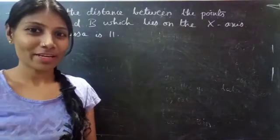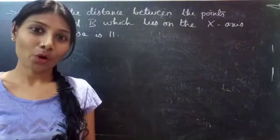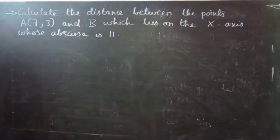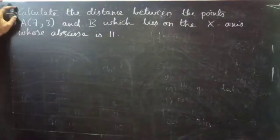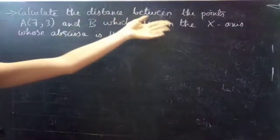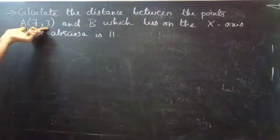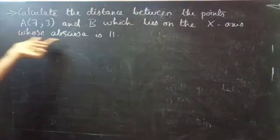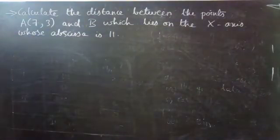Hello everyone, this is Yukalpna here. In this video, we are going to see a problem on coordinate geometry. So let's get started. Here is the problem: Calculate the distance between the points A and B, which lies on the x-axis, whose abscissa is 11.